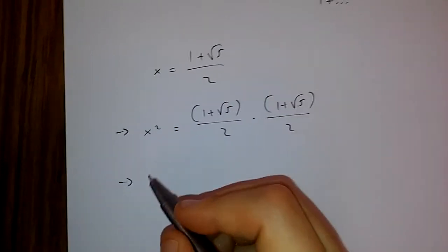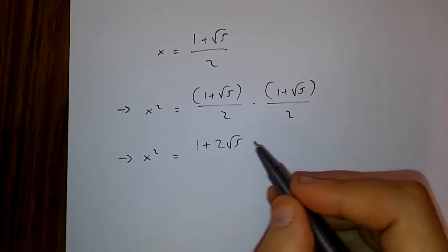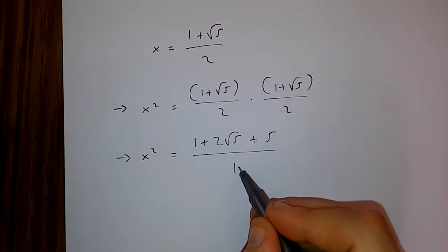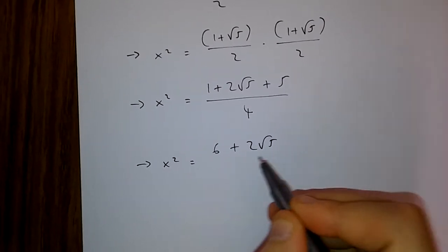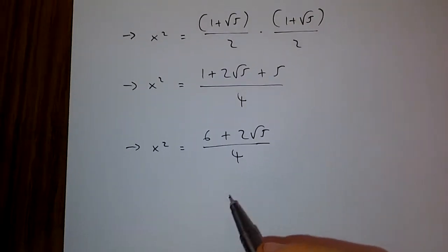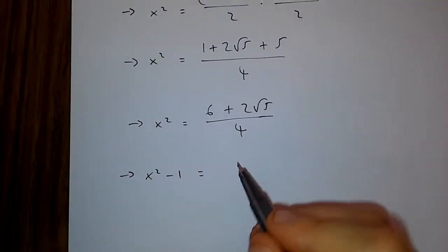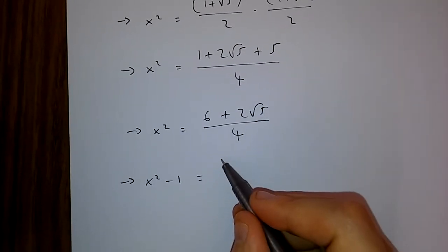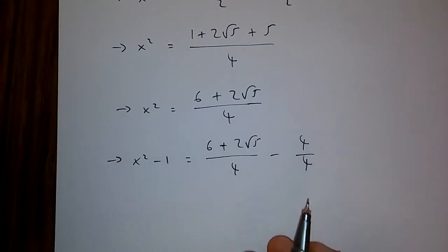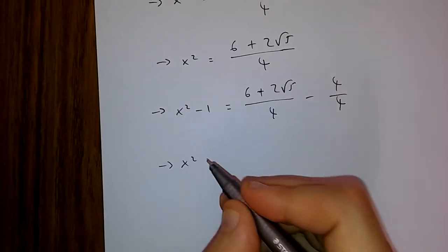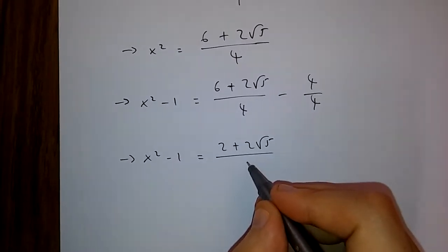Now if we have this, we end up getting x squared is equal to 1 plus 2 root 5 plus 5, over 4. This is the same as 6 plus 2 root 5 over 4. From here, I'm going to subtract 1 from each side of this equation. So I end up getting x squared minus 1 is 6 plus 2 root 5 over 4, minus 4 over 4. And this is the same as x squared minus 1 is equal to 2 plus 2 root 5 over 4.